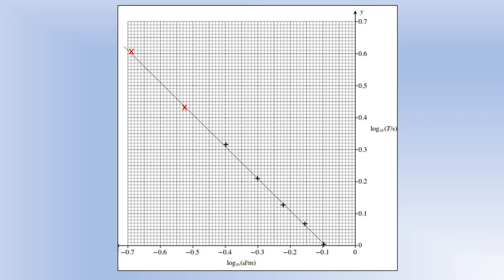And let's stick a line of best fit in. And what I'm looking for is that there's roughly equal number of points above and below the line. So we've got three above, we've got two below, and then two on it. So that looks fine to me.